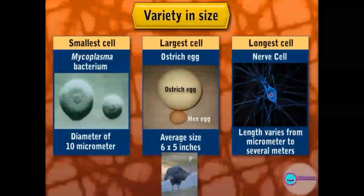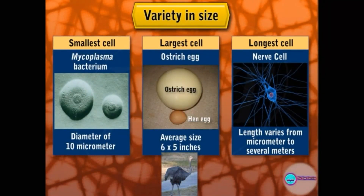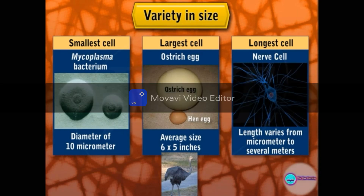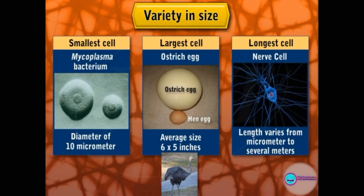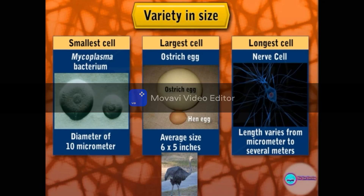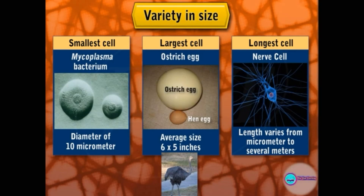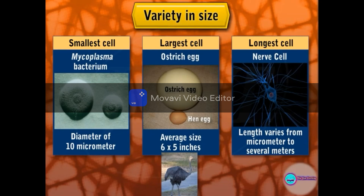The size of the cell varies. In animals, the smallest cell is mycoplasma with a size of 10 µm, and the largest cell is the ostrich egg with a size of 6 × 5 inches. In humans, the smallest cell is the RBC with a size of 6–8 µm, and the longest cell is the nerve cell or neuron, whose length varies from micrometers to several meters. The size of cells has no relation with the size of the body — for example, an elephant does not have bigger cells than a rat. The size of the cell is related to its function.